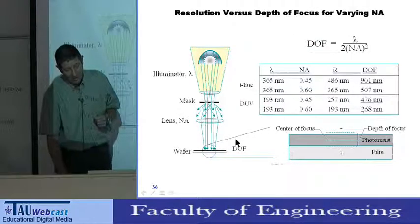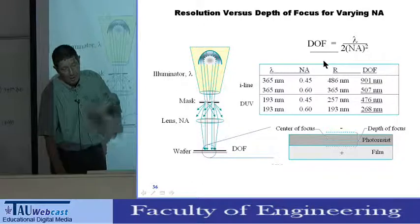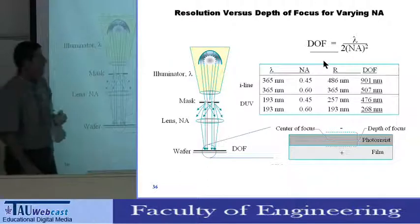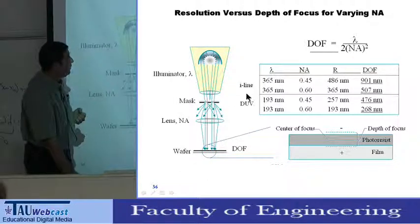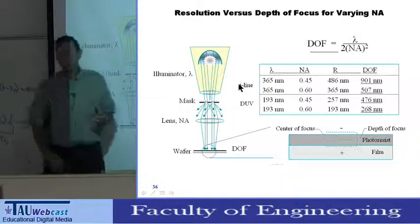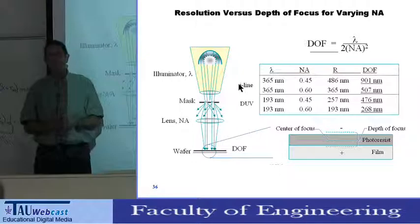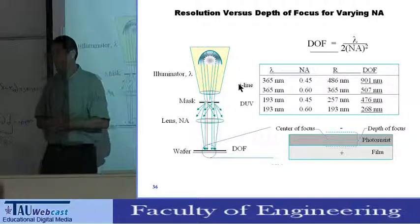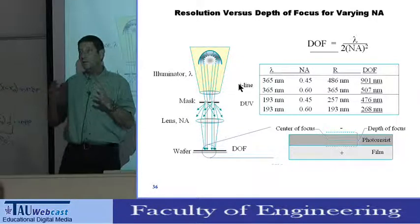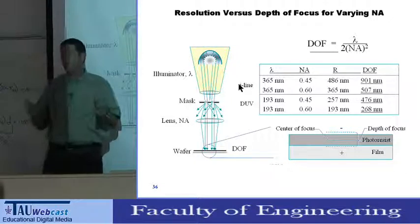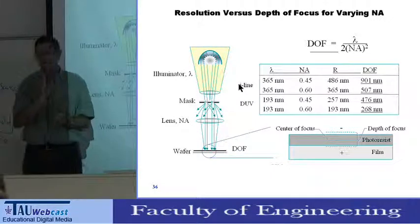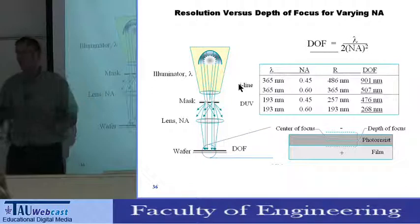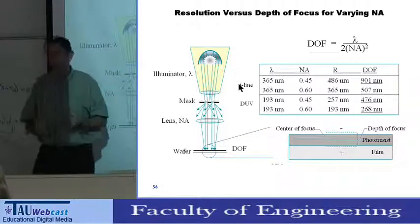This is the same equation again, but with another calculation added. This figure is similar to the previous one, but here I calculate the resolution for practical systems: I-Line and DUV. I-Line is a very common system used since about 20 years ago and still very common in manufacturing. I-Line is the spectral line of mercury — people use mercury lamps at this very specific wavelength. It's a workhorse of the industry for low resolution.